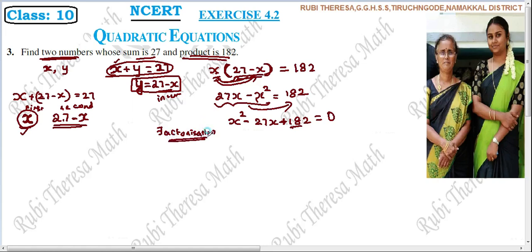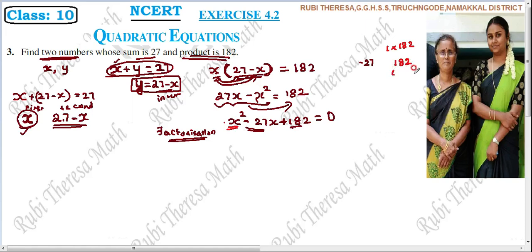What is the middle term? Minus 27 is the middle term. To split the middle term, we multiply the coefficient of X squared with the constant term: 1 multiplied by 182 equals 182. We need to find a factor pair of 182 that adds to minus 27. Taking L-division of 182.